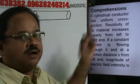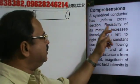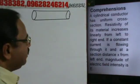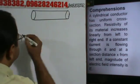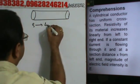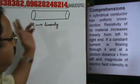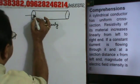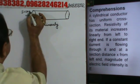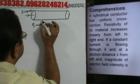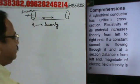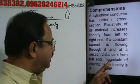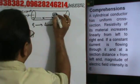Next problem: a cylindrical conductor has a uniform cross section. The resistivity of its material increases linearly from left to right. A constant current is flowing through it. At a section at distance x from the left end, I is constant. The magnitude of electric field intensity is E.